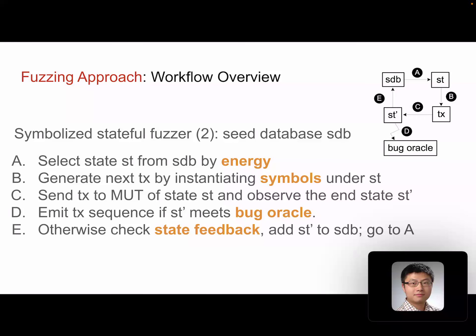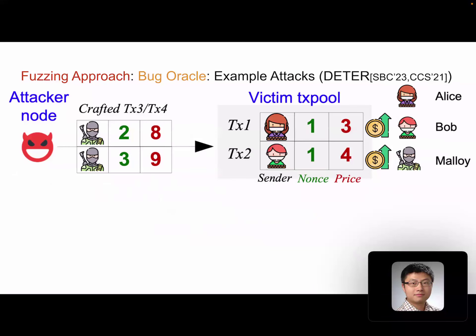In this workflow, we propose new techniques regarding energy, symbol, bug oracle, and state feedback. In the next couple of slides, I'm going to briefly introduce the idea of those new techniques. First, bug oracle: our MPFuzz is designed to find a specific kind of design flaw — the memory pool DOS vulnerabilities. Let me use an example to illustrate how the bug oracle is designed. I'll use an example attack, the Deter attack, which is the paper we presented at CCS last year.